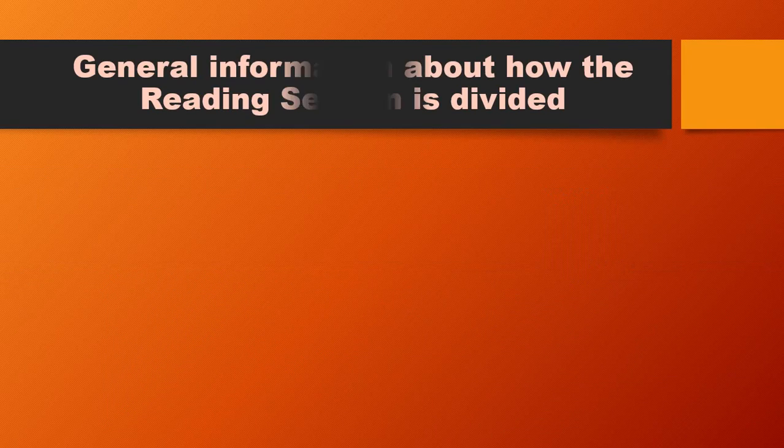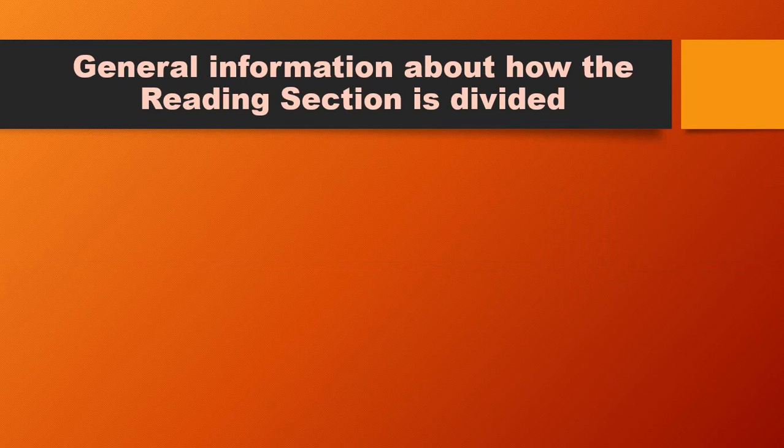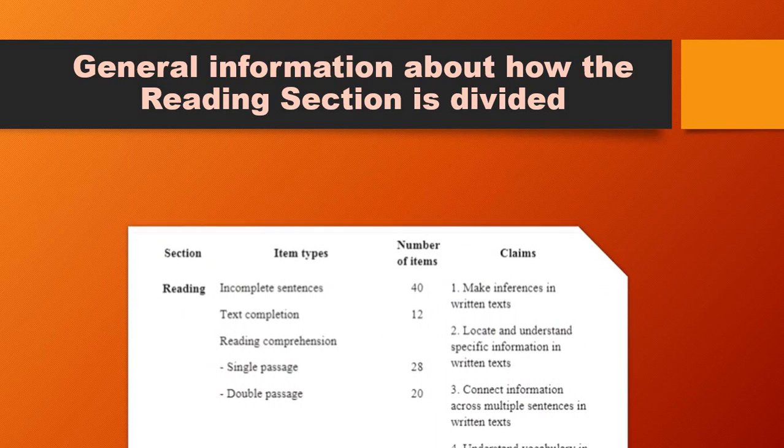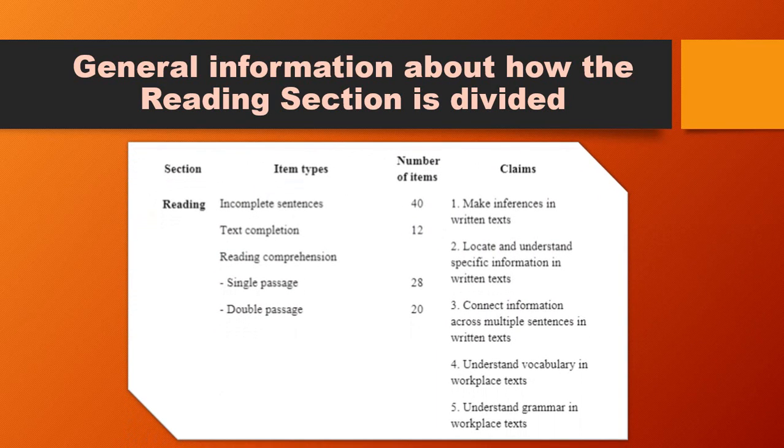General information about how the reading section is divided. In the TOEIC reading section, there are three main parts as shown in the table. The first part contains 40 multiple choice questions of discrete sentence length gap filling exercises. In this part, recognition of grammatical rules and vocabulary are tested.